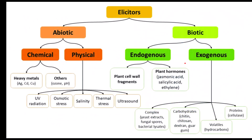Elicitors are divided into two types: abiotic and biotic. Abiotic elicitors are further divided into chemical and physical elicitors. Chemical elicitors include heavy metals like silver, copper, and cadmium, as well as ozone and pH. Physical elicitors include UV radiation, osmotic stress, salinity, thermal stress, and ultrasound.